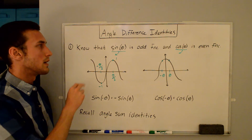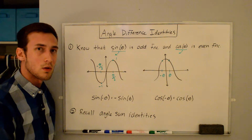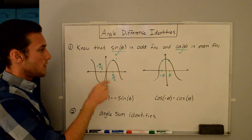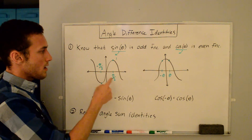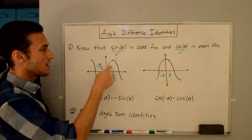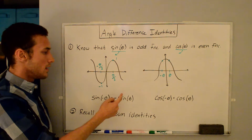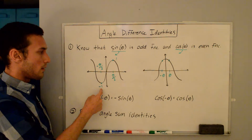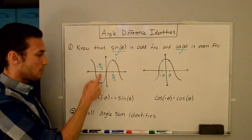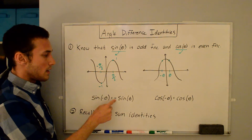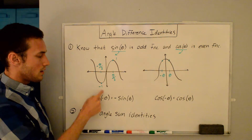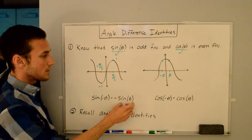The first is that sine theta is an odd function and cosine theta is an even function. On this plot, for sine of pi over 2, we know that's 1. If I take sine of negative pi over 2, I get negative 1. So we can say sine of negative theta is equal to the negative of sine theta.